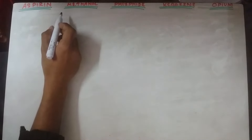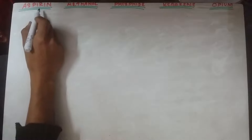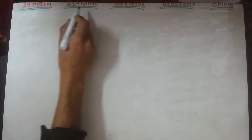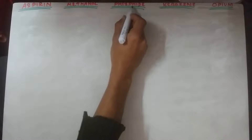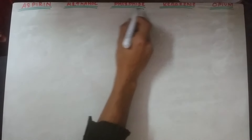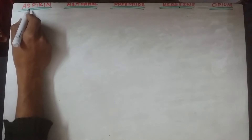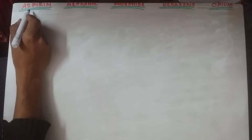This is the second lecture of toxicology and poisoning. In this lecture we will be discussing aspirin, methanol poisoning, phosphide, kerosene poisoning, and opium toxicology. Starting from aspirin: acetylsalicylic acid is hydrolyzed to salicylic acid.